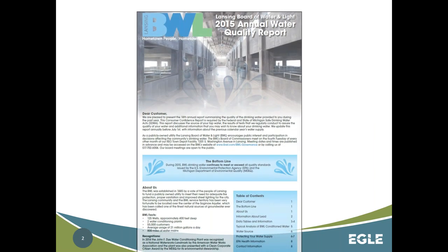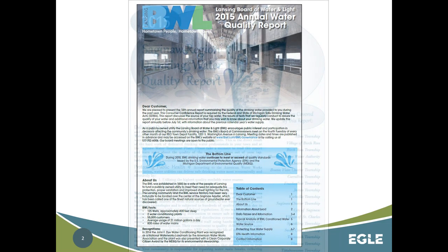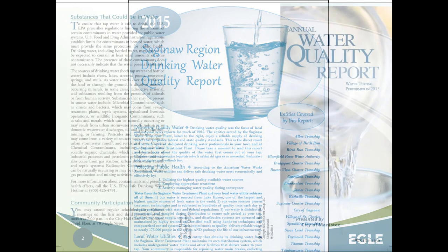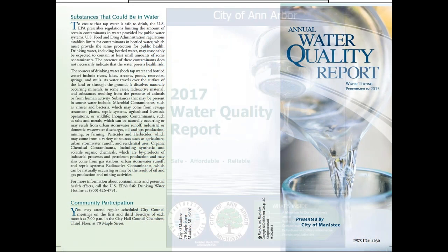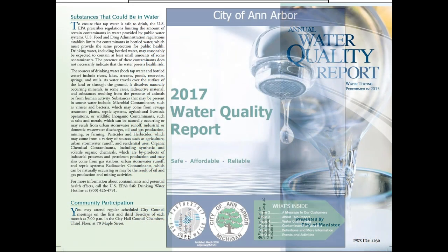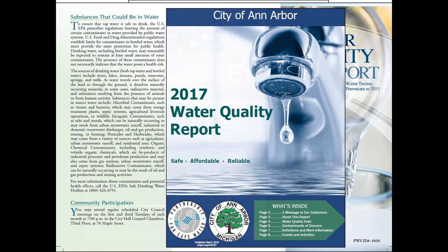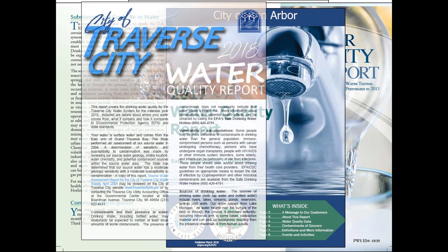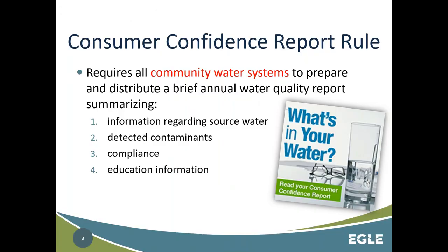The CCR is basically an annual water quality report that every community water supply publishes for their consumers. It's really a great way for them to share important information as well as show how proud they are of their water system throughout the year. The CCR rule does require that every community water system prepare and distribute this water quality report, and it has about eight requirements.